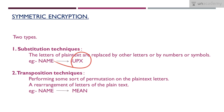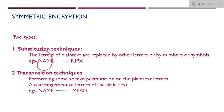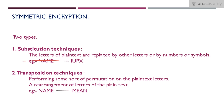For example, our plain text is 'name' and we form the cipher by replacing N with I, A with U, M with P, and E with X. So the word 'name' becomes 'IUPX' — now it is impossible to recognize. That is substitution: the letters of the plain text are replaced by other letters, numbers, or symbols.